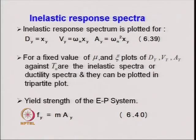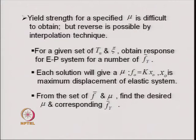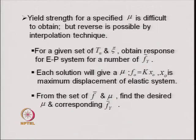The yield strength of the elastoplastic system is given by F_y = m × a_y. However, obtaining the yield strength for a specified μ directly is difficult, but the reverse is possible through an interpolation technique — and this was the intent of reformulating the equation of motion as equation 6.38.